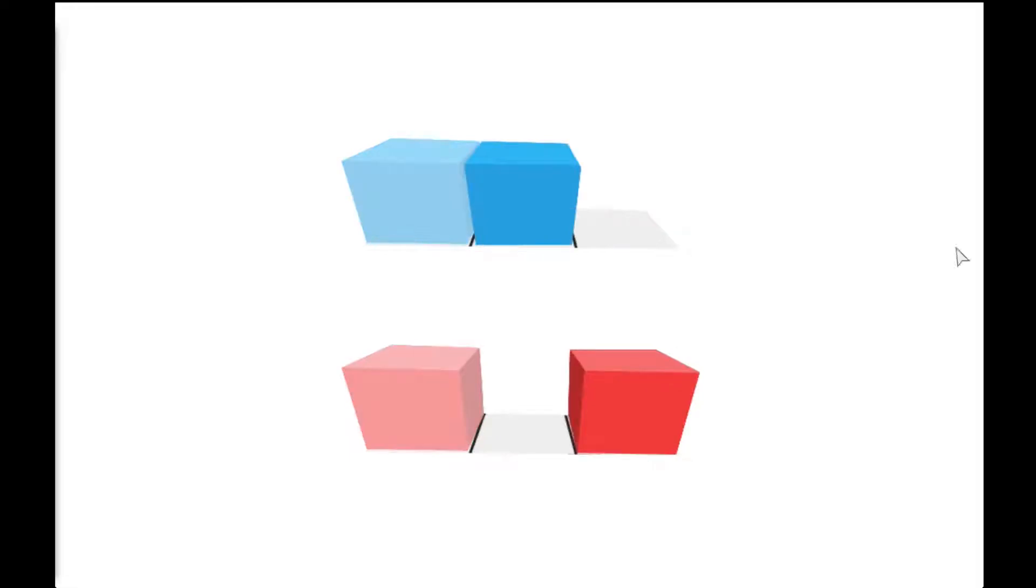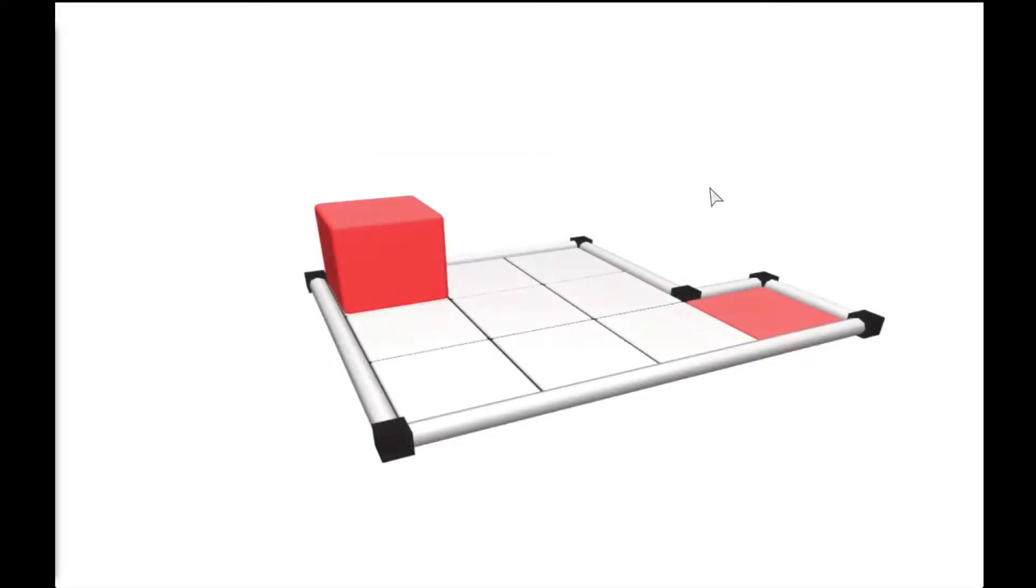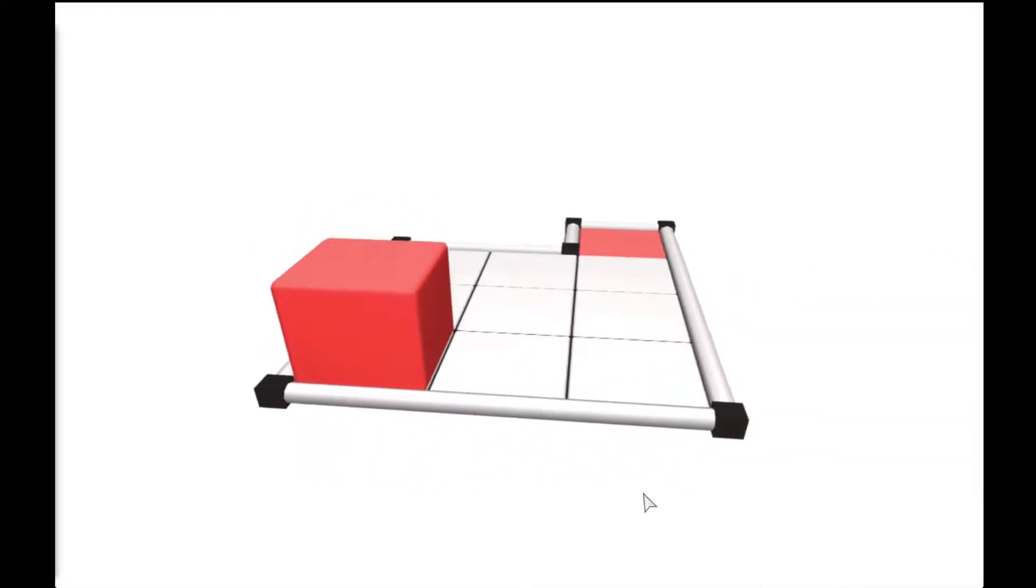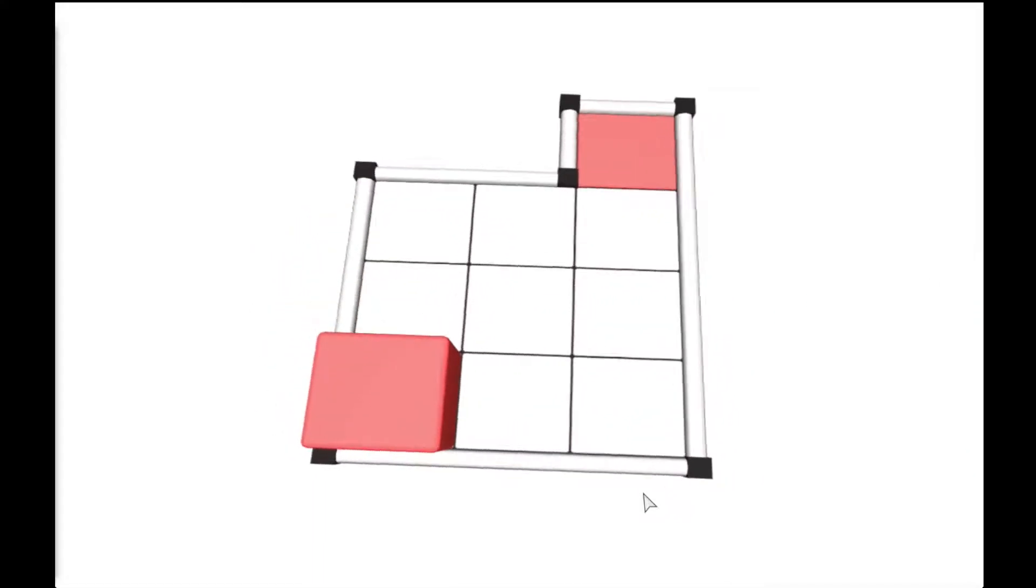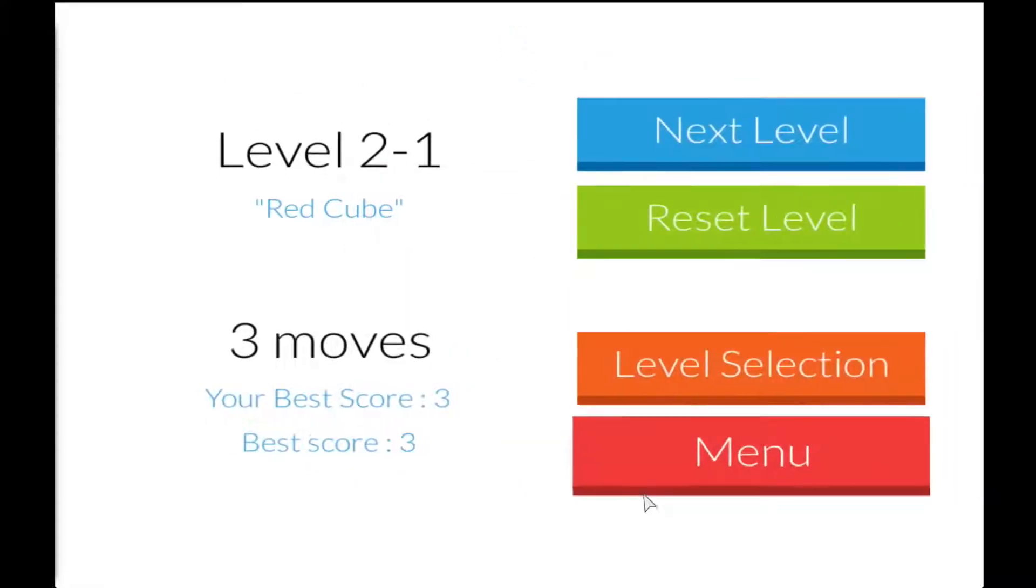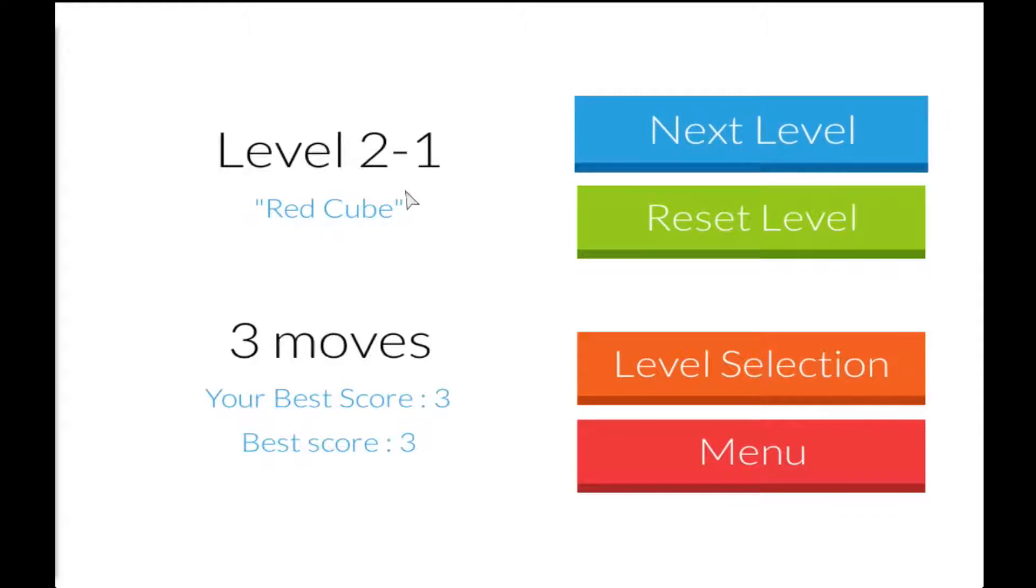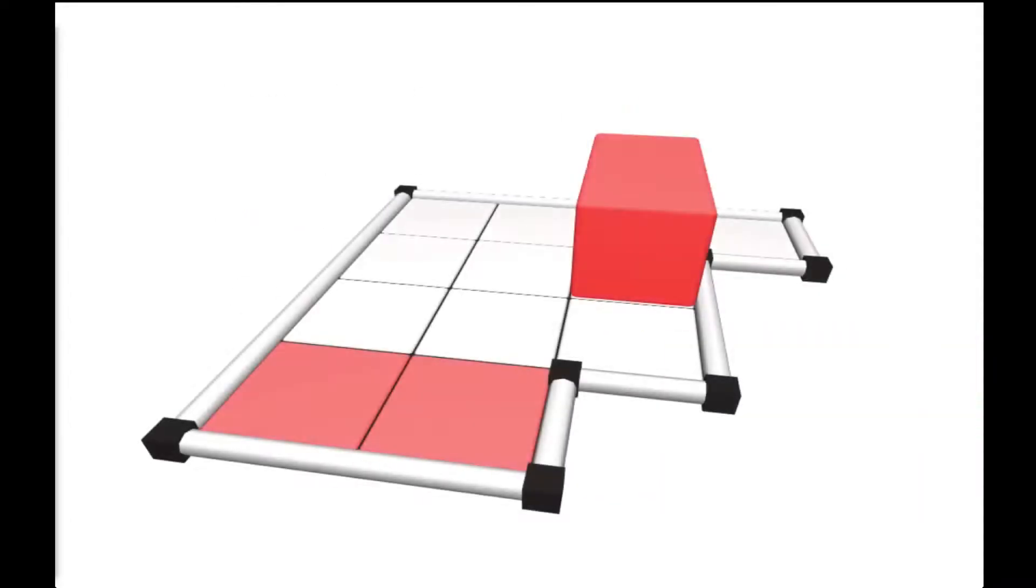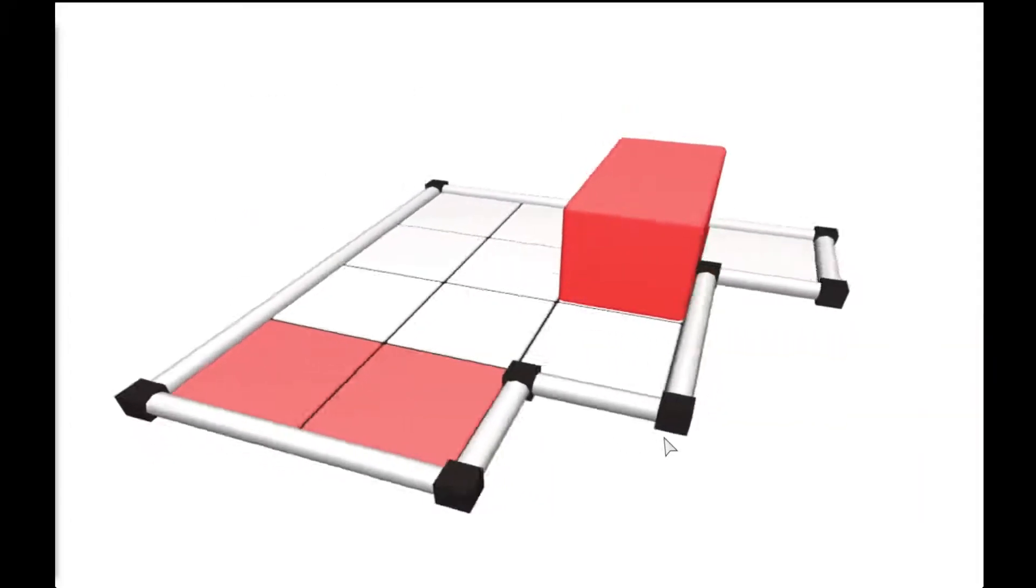So here's where you start getting some new mechanics, and that is the red tile. So just like in chess, how different pieces have different movement patterns, the red cube moves two at a time. And the only way it will move fewer is if there's only one spot to go. So here, just one. That was easy. This is level 2-1, the first introduction to the red cube. There will also be green cubes and other kinds of cubes.